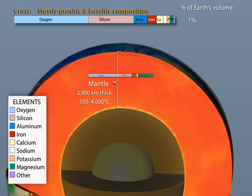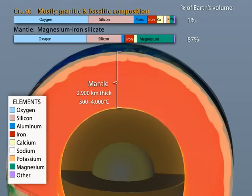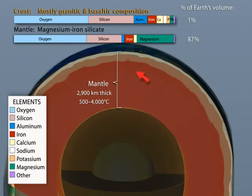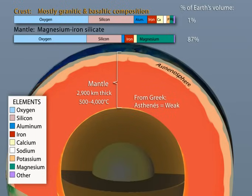Below the crust is the mantle, composed of the same elements but in different proportion, with increasing amounts of the heavier elements in the rock. The chemical composition of the 2,900 kilometer thick mantle varies little from top to bottom, but there are distinct physical variations due to temperature and pressure differences. The uppermost mantle is relatively cool and brittle and ranges from 50 to 120 kilometers thick. Below this zone, the upper mantle becomes notably more plastic and malleable due to the right combination of heat and pressure. That ductile zone is known as the asthenosphere and varies up to 400 kilometers deep, depending mainly on temperature.